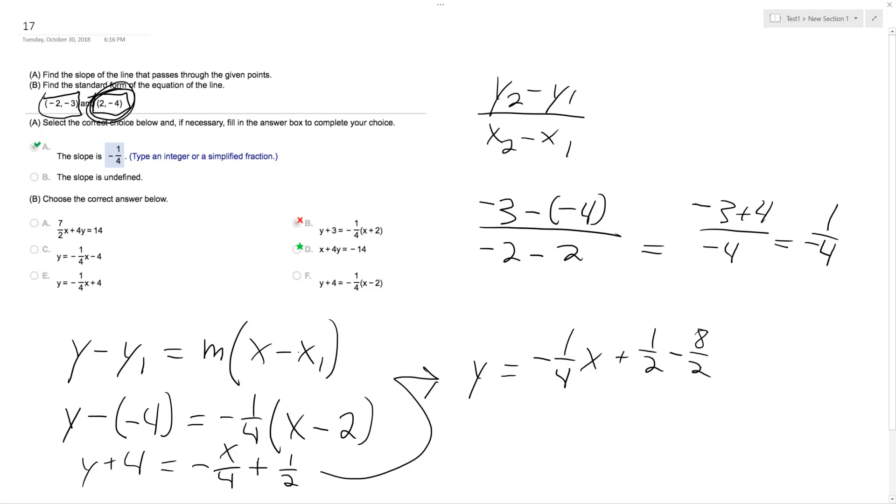This is the right answer, but you just got to get it in the form they're looking at, so this ends up being minus 7 halves. If we multiply 4 through, we get 4y equals negative x minus 14. And if we add x to the other side, we get x plus 4y equals negative 14.